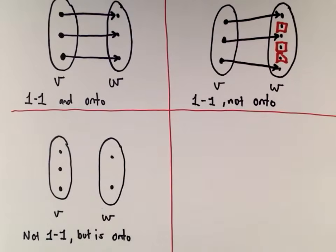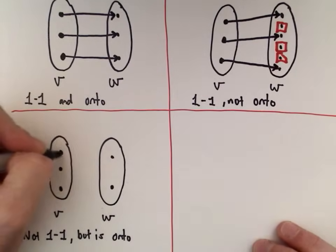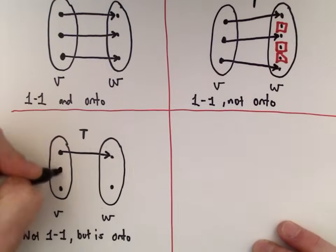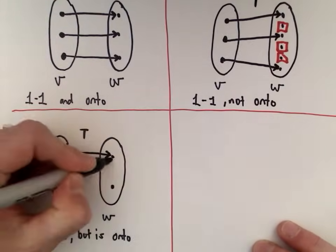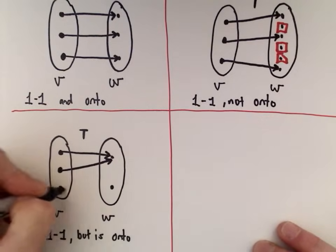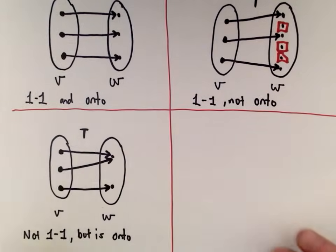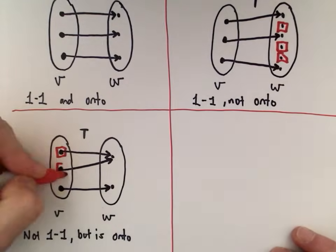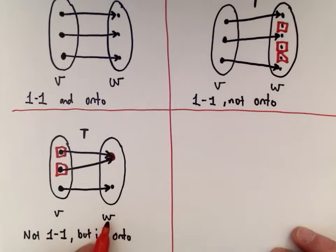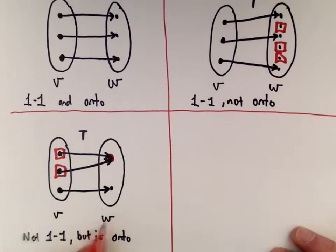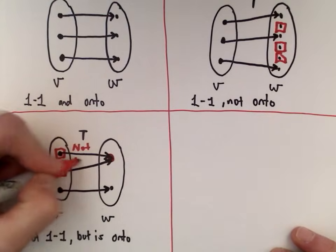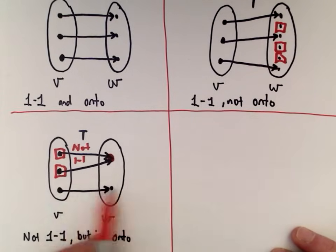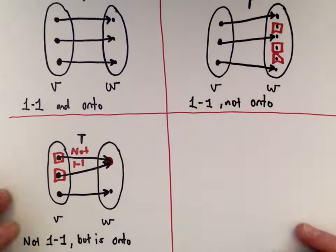In the last diagram example, the first element maps to the first one, the second element also maps to that same first one, and the third element goes to another. This is not one-to-one, because two distinct elements are going to the same element in W. It is onto, though, because both elements in W each have a corresponding vector mapped to them.